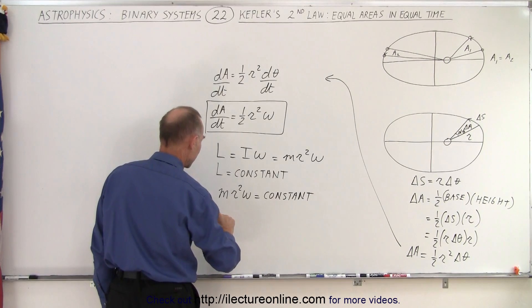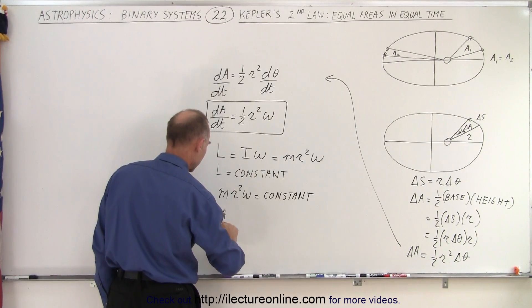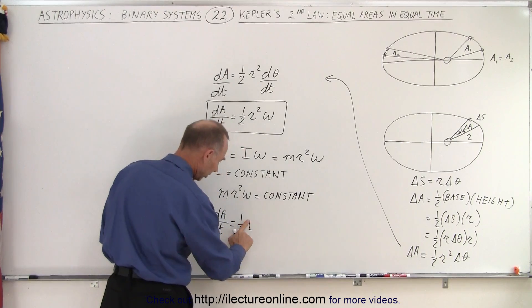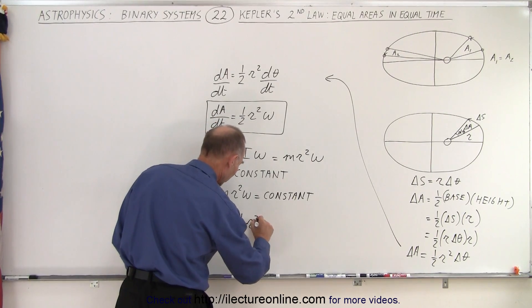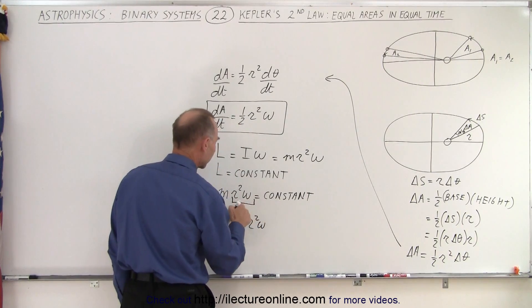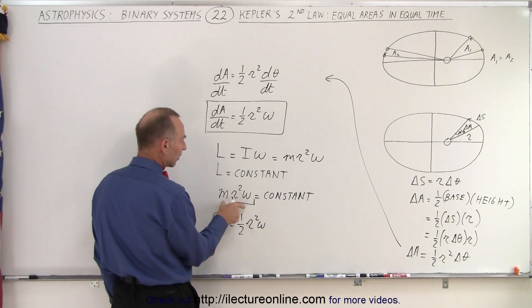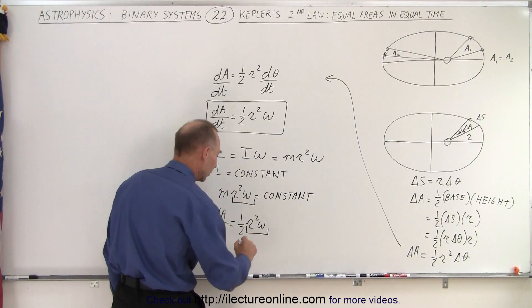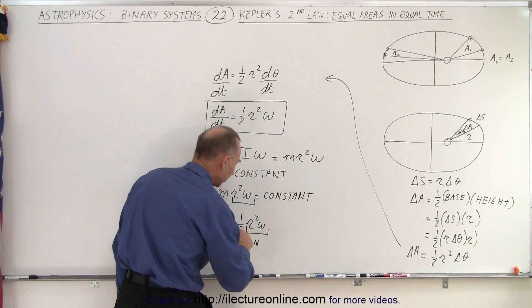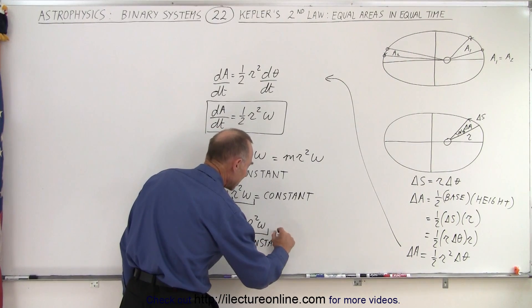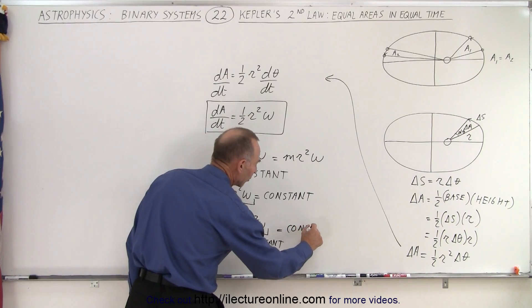And so now when we take a look at this, we can say that dA dt is equal to one half r squared times omega, so notice that this must be a constant, since you know m is a constant, and the product is a constant, which means that this must be a constant as well. And of course, one half is a constant, so that means that the dA dt, that must be a constant as well.